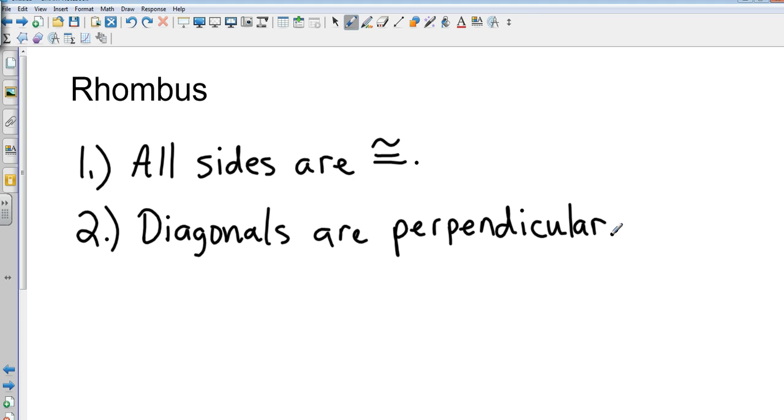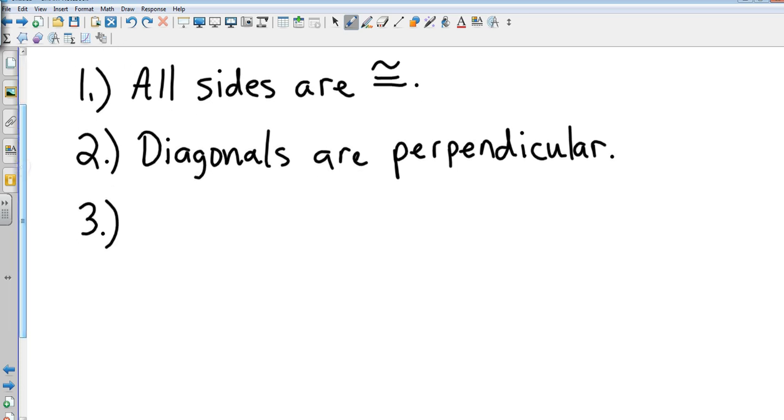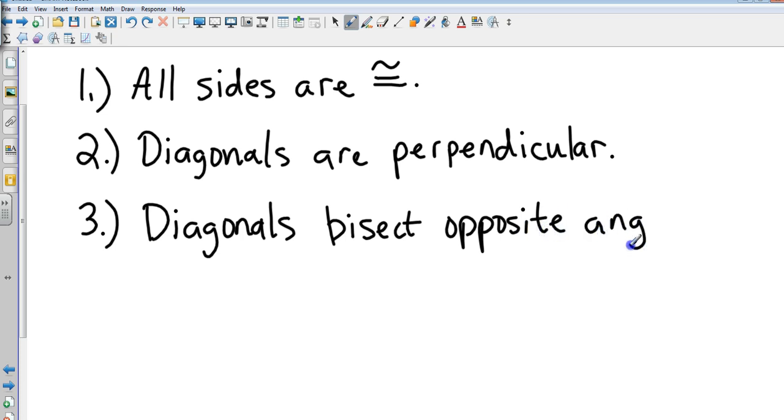The third main difference is that the diagonals bisect opposite angles. Okay, so the diagonals are now angle bisectors.